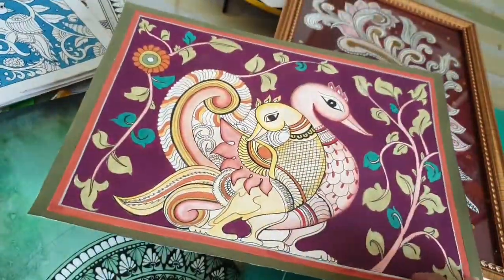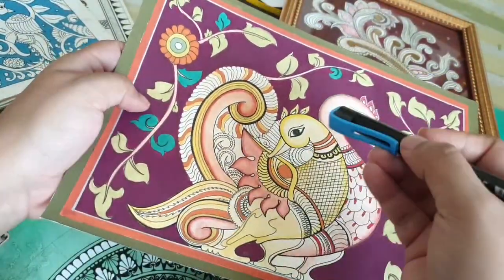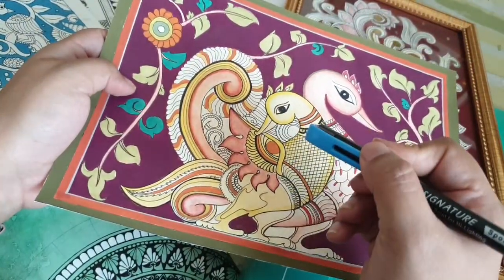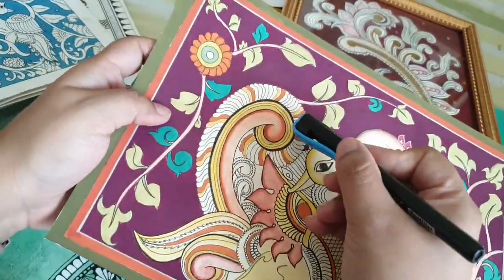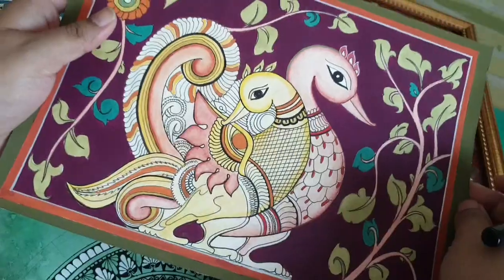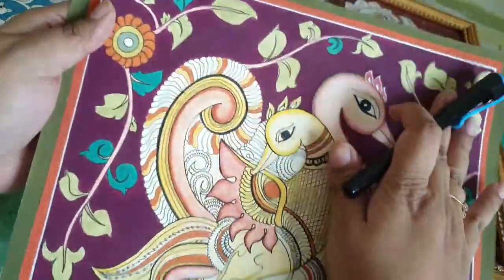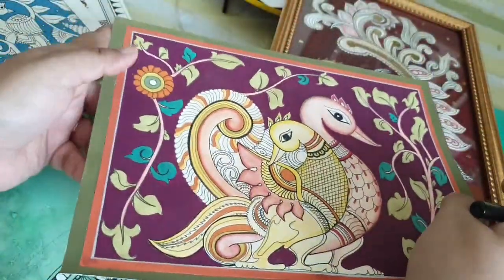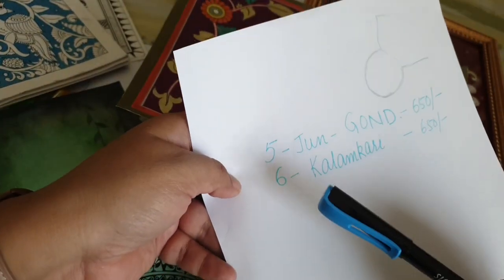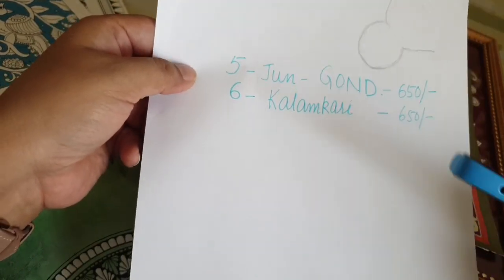If you are interested to join the workshop, this is the motif we are going to cover. I will show you how to create the motifs and what specifics you have to keep in mind. There is a way the pen moves and a way the motifs are drawn — not just flowers and leaves, but even the tail will have bends so that overall your painting looks like authentic Kalamkari work. We will discuss all that in the workshop. The Kalamkari workshop is on 6th of June and the fees is 650 rupees.